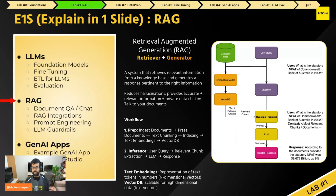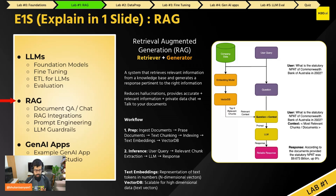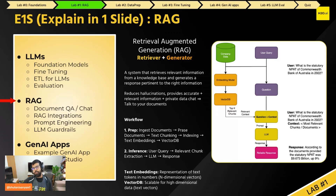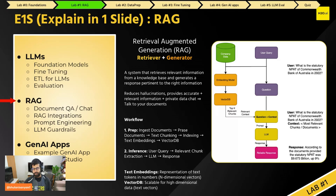A very powerful idea is retrieval augmented generation, or RAG. This is where you store a large corpus of documents and allow an LLM to answer queries using all of that stored information. For example, a bank with thousands of policies could have an LLM look at those stored policies and answer questions about opening accounts or savings rates. RAG uses two different models internally: a retriever model and a generator model. This happens after the dataset has been chunked and stored in memory.